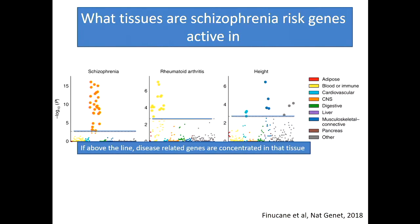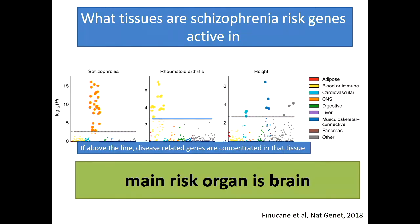You can ask whether these genes are active in fat tissue, the immune system, the cardiovascular system, the gut, the liver, and so on. The colours correspond to different tissues. If you see a dot above a line, it means the genes are more active in that tissue than any other. The tissue in schizophrenia where the genes are active is the central nervous system - there's pretty much no evidence for genetic activity in any of the other tissues. So the main risk organ is the brain.